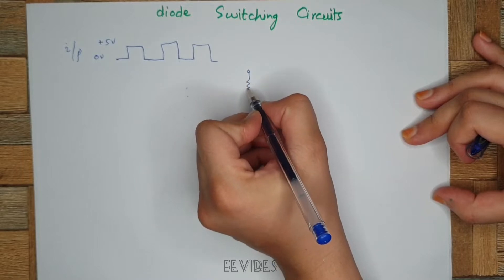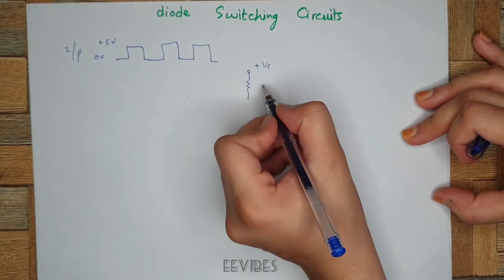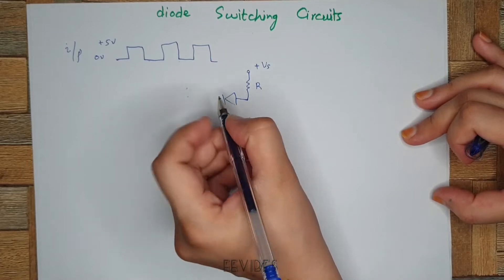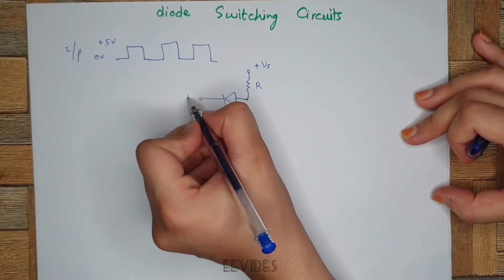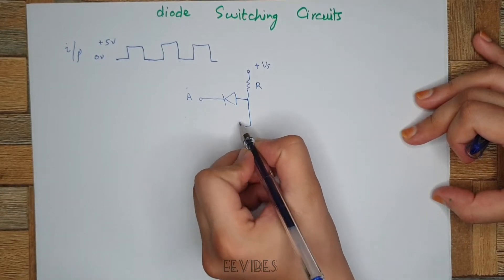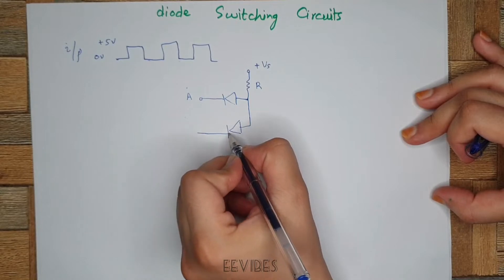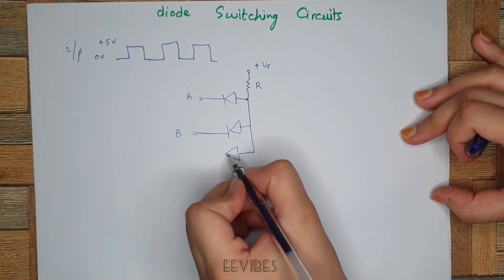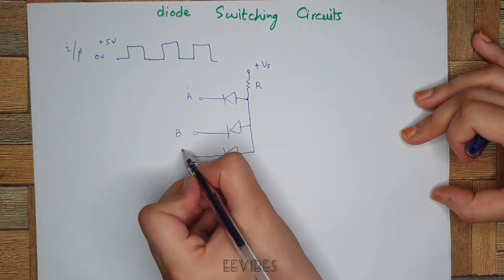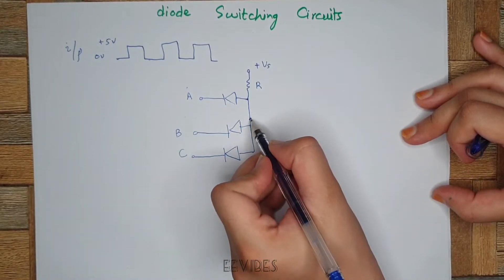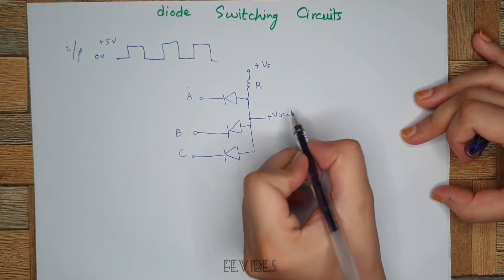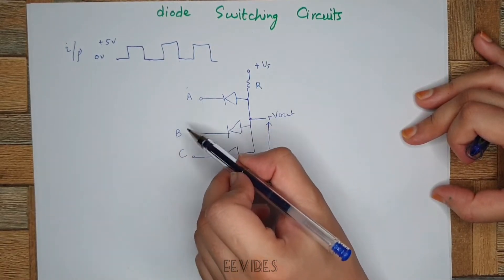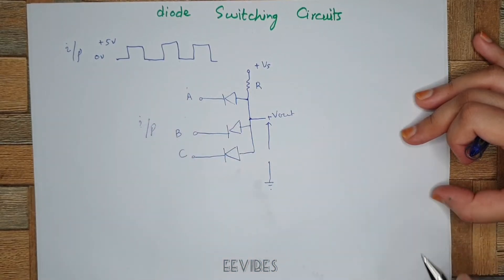Generally speaking, the diode switching circuits are designed by connecting a supply voltage through a resistor R to the parallel combination of the diodes, where they are connected at a common junction or a common point. You can see clearly in this simple switching circuit I am connecting three diodes in parallel, and their anodes are common. This common point is actually where we will be calculating our output voltages with respect to the ground potential. Here A, B, and C are called the inputs of the circuitry.